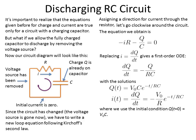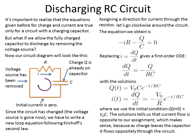Looking at the initial conditions: at time equals zero, plugging in zero for t, we get an initial charge of V-naught times C, which is just our original charge placed on the capacitor. The solution also tells us that the current has a minus sign — we originally said the current is flowing from left to right, but this minus sign says the current is actually going to flow from right to left. That makes sense because we have a lot of charge built up on one side and no charge on the other, so the charge flows in that direction to equalize itself.